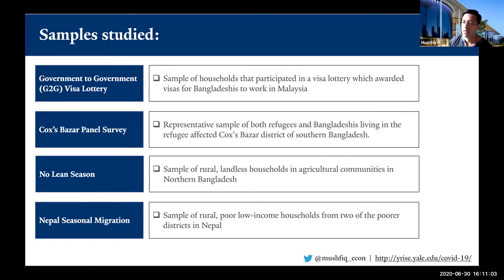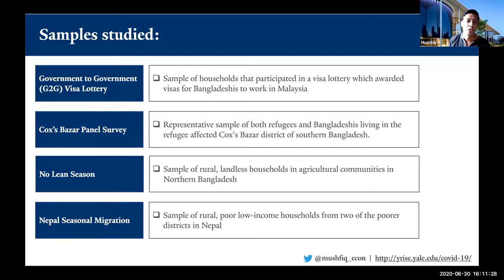We've collected data on multiple samples of households across Bangladesh and Nepal. One of these samples is based on a visa lottery, which means we also have very good empirical identification — lottery winners versus lottery losers. It's not an endogenous decision of migration governing whether effects in migrant versus non-migrant families are different. We have an explicit randomized lottery outcome, so we can study very cleanly how life looks during the COVID period for lottery winners versus lottery losers.